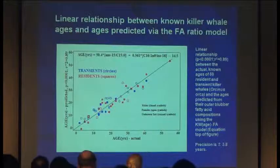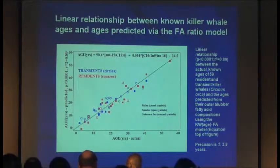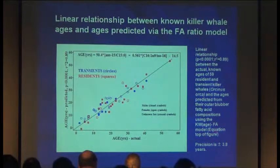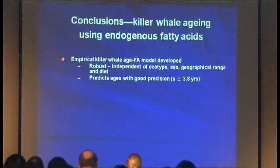He found a nice linear relationship. Here we're showing the actual ages of the animals versus the predicted ages from his model. He used two different terms from these different kinds of fatty acids, and it was a pretty good relationship — the R-squared value is 0.89 and his precision with this model is plus or minus 3 years. The model was independent of ecotype, geographic location, sex, and diet, and predicts ages with good precision.